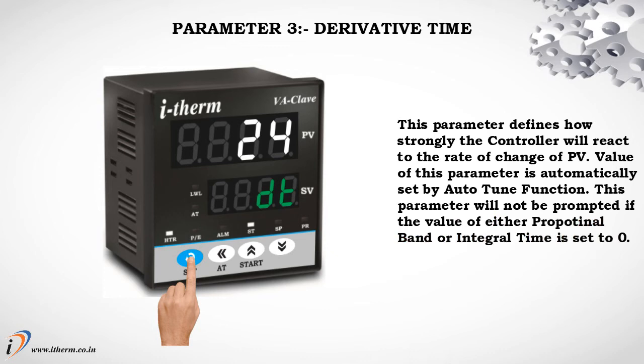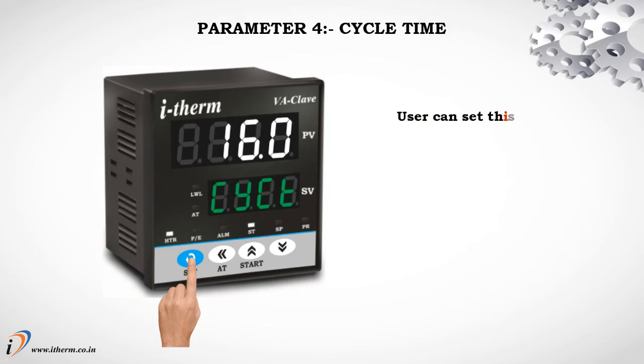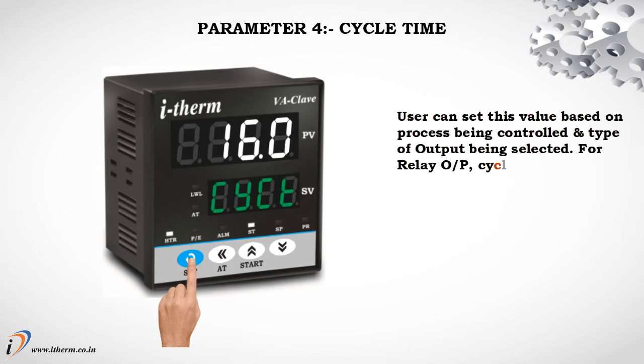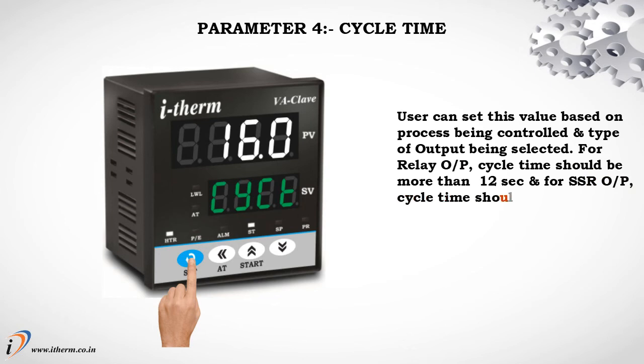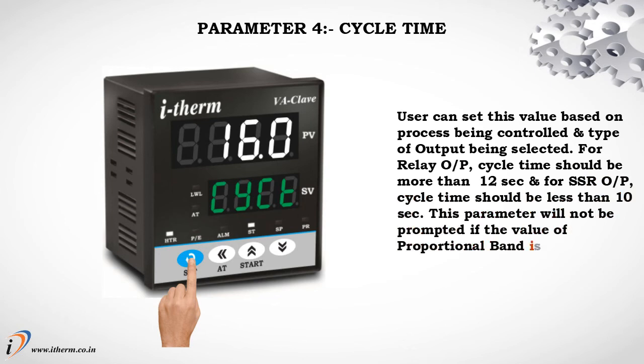Parameter 4: Cycle Time. The user can set this value based on the process being controlled and the type of output being selected. For relay output, cycle time should be more than 12 seconds. For SSR output, cycle time should be less than 10 seconds. This parameter will not be prompted if the value of proportional band is set to 0.